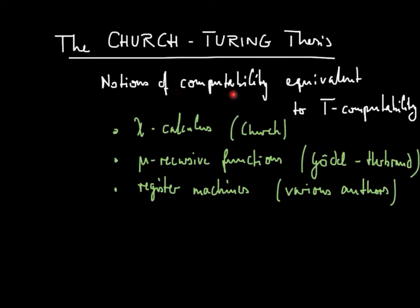However, it turned out that other notions of computability, so they're based on different models, were equivalent to Turing-computability. So here are some of those concepts. There's the lambda calculus introduced by Church. There's the concept of a mu-recursive or just recursive function that's due to Gödel and Herbrand. And then there's register machines that were developed by various authors later on. So those were developed more or less around the same time that Turing proposed his model of a Turing machine. And all allow you to define the notion of a computable function and try to capture the notion of an algorithm formally. And it turned out that all these notions of computability are equivalent and also equivalent to Turing-computability.